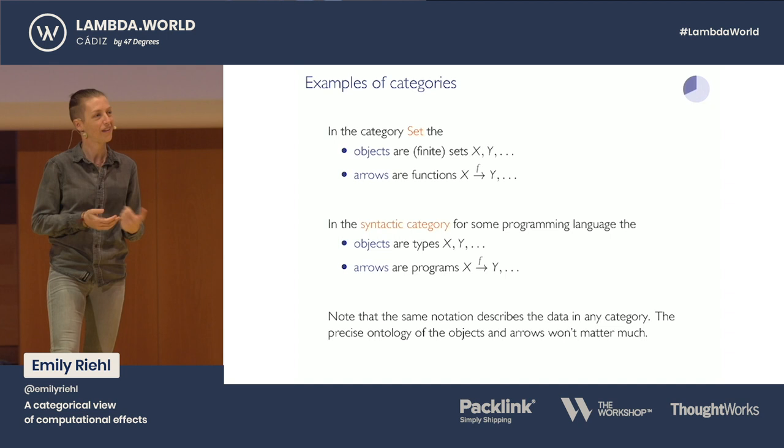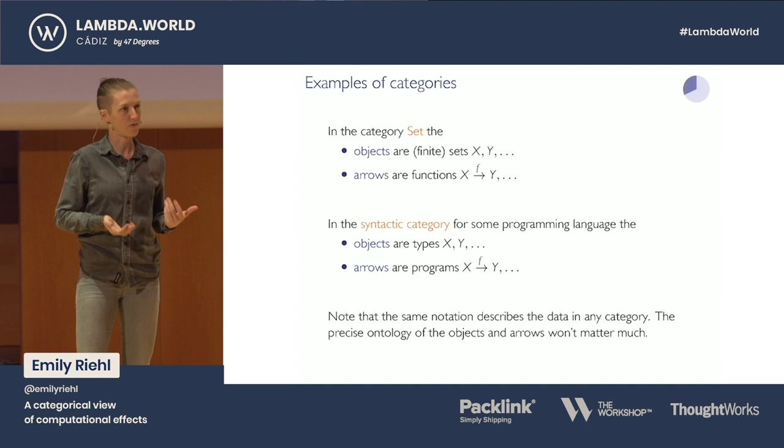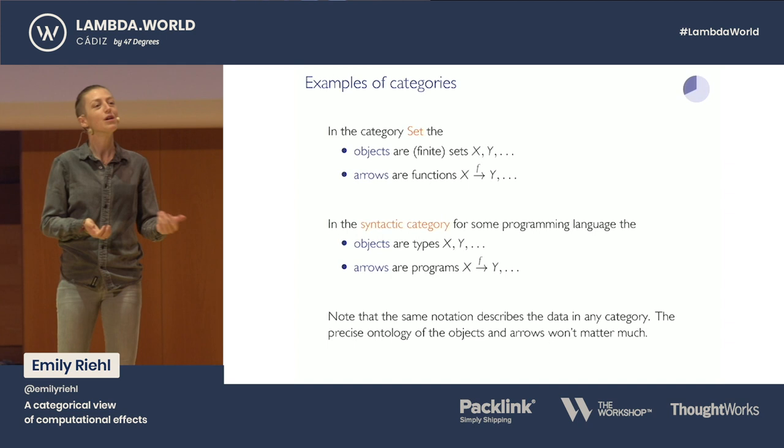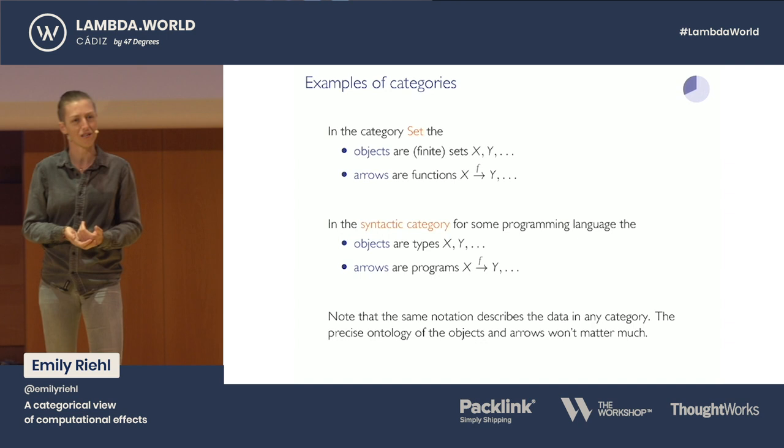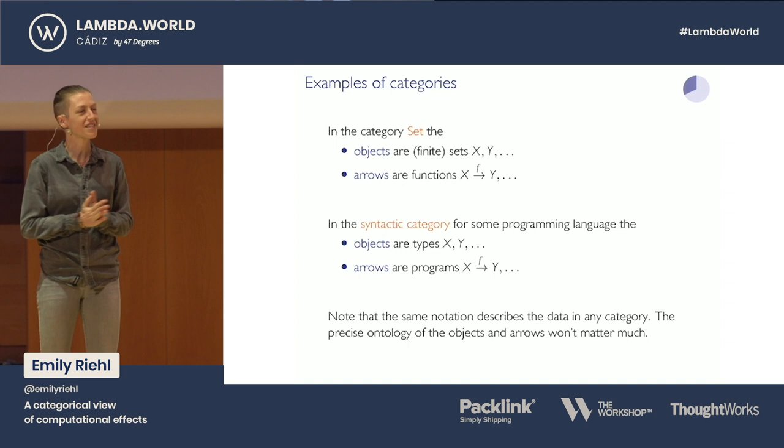We're going to use categories in this talk to emphasize the axioms you would want when composing programs, but the precise ontology of the objects and arrows won't matter too much. That's the end of part one — introduction to categories. Any questions before we go on?